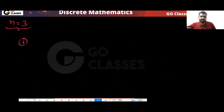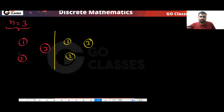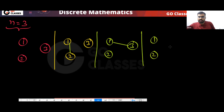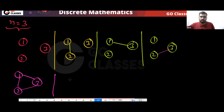For example, if you have n equal to 3, then you have three vertices: 1, 2, 3. You can create this graph, or this graph, or this graph — we only want labelled graphs. You can create various combinations like this.